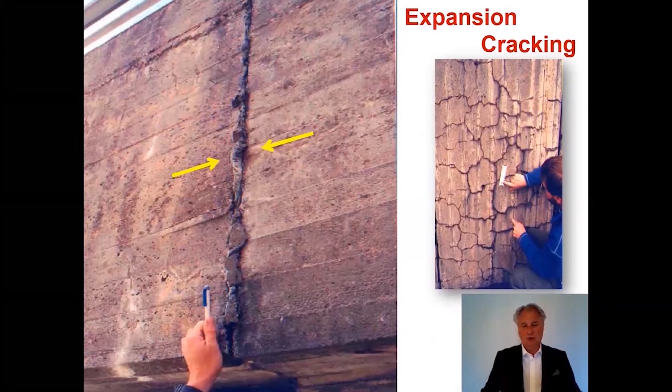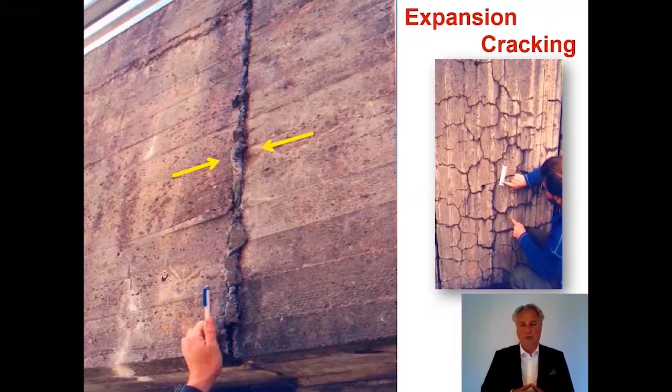The alkali-silica gel absorbs moisture, and by absorbing, it expands. The expansion forces are strong enough for the whole concrete body to expand. You could have some expansion of the concrete body and some map cracking. All these expansions and cracks will be bad for the concrete structure and could also introduce secondary damage like frost-thaw damage, reinforcement corrosion, and so on.